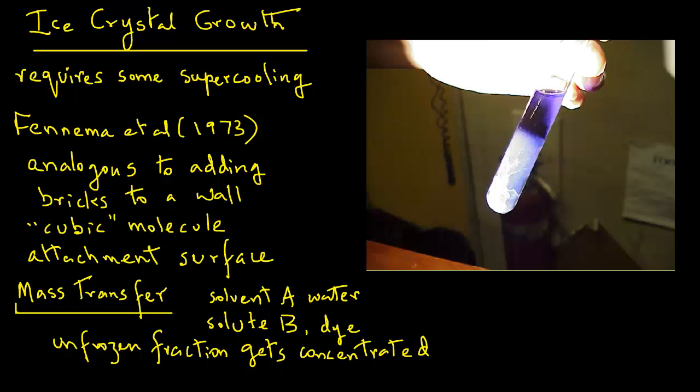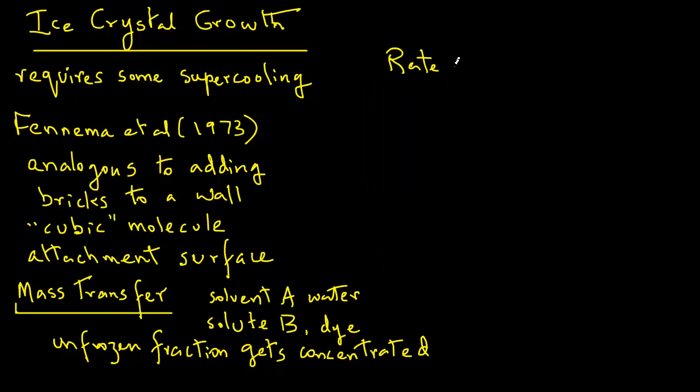The second mechanism influencing rate of crystal growth is related to heat transfer. As we had seen before, ice formation is accompanied by heat of crystallization, which must be removed from the interface.